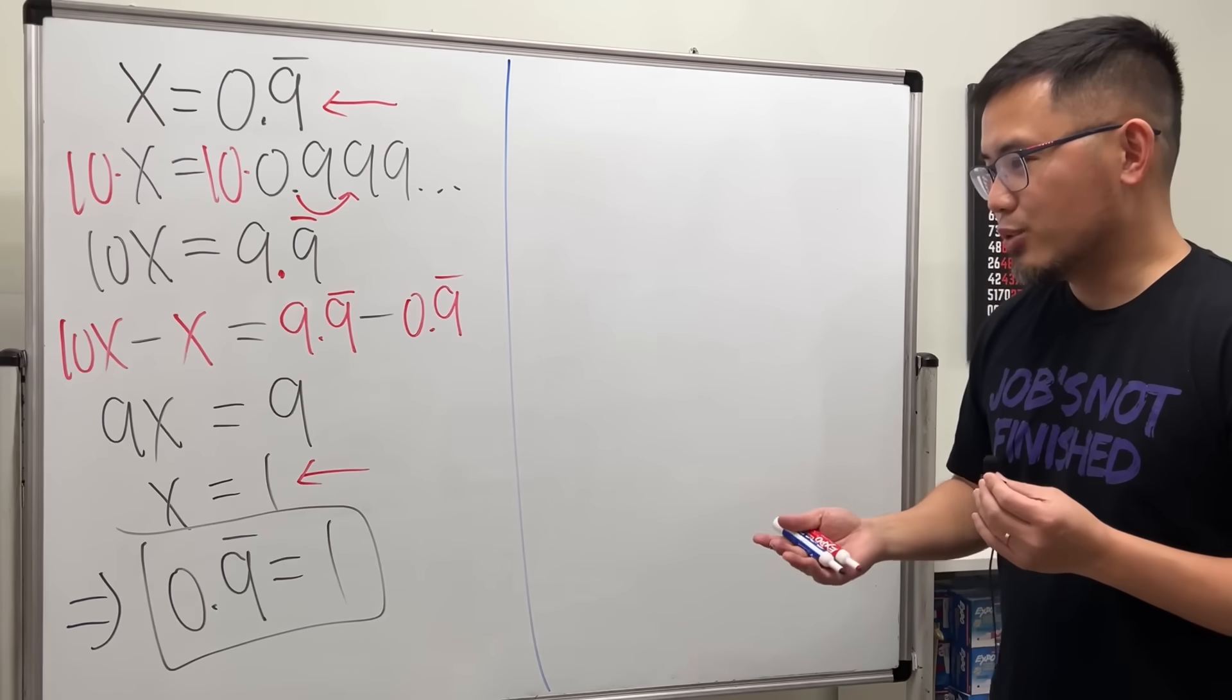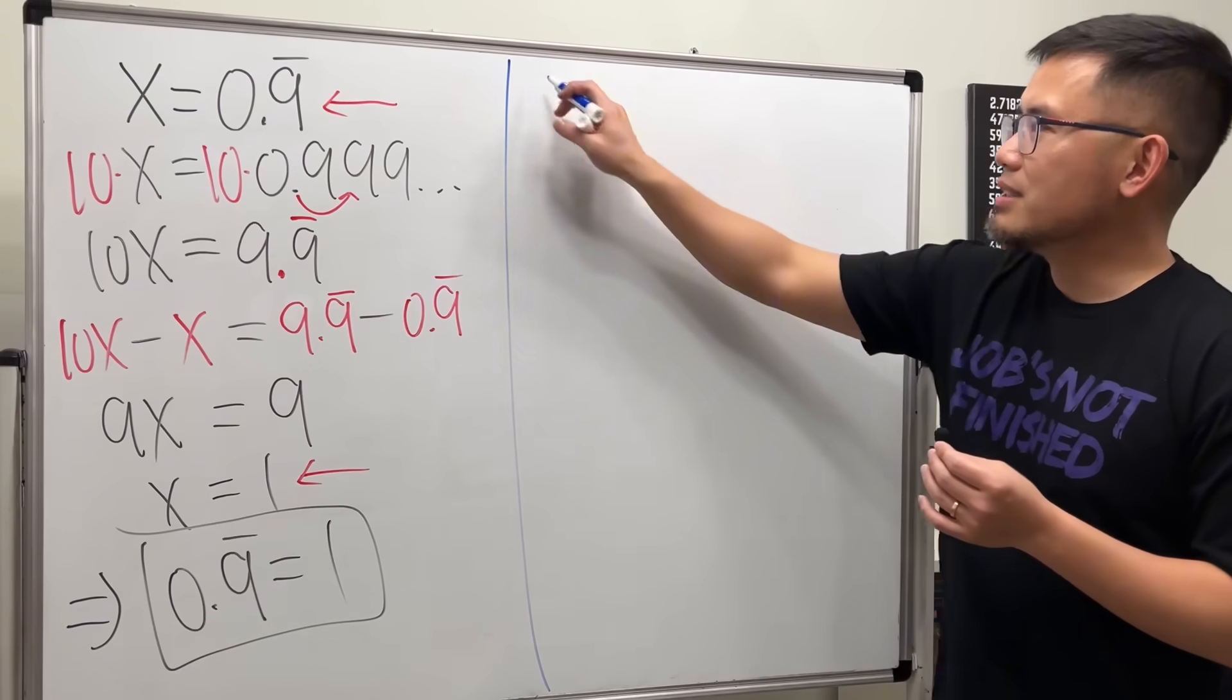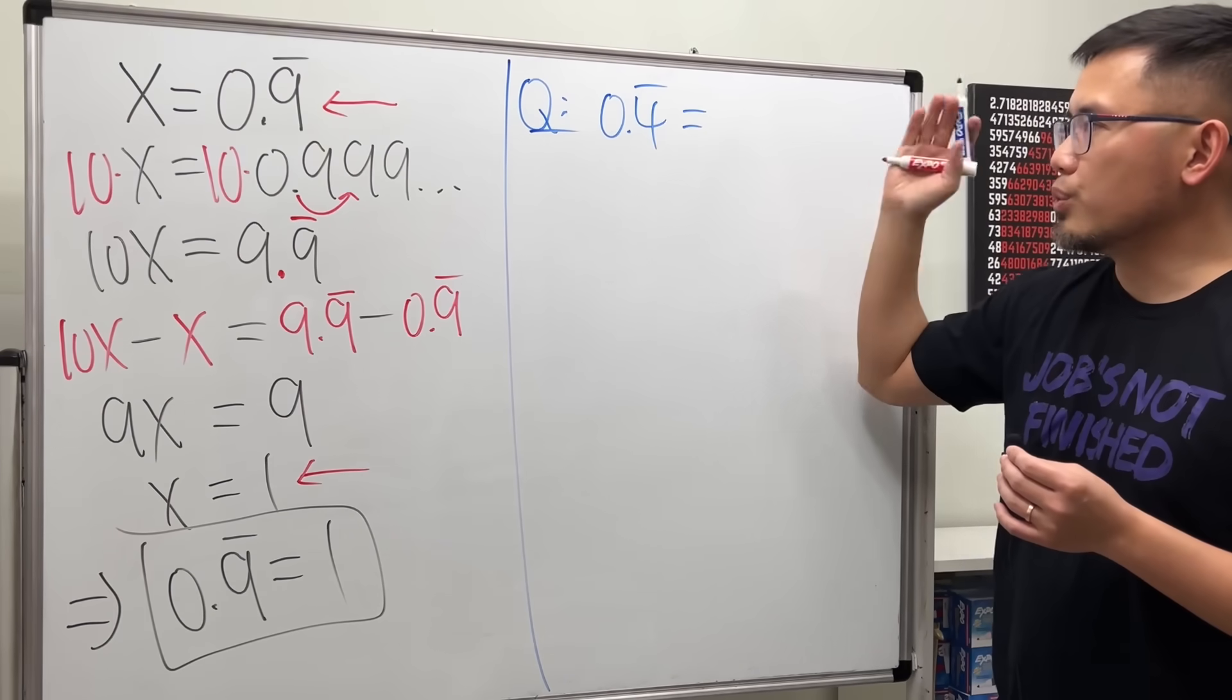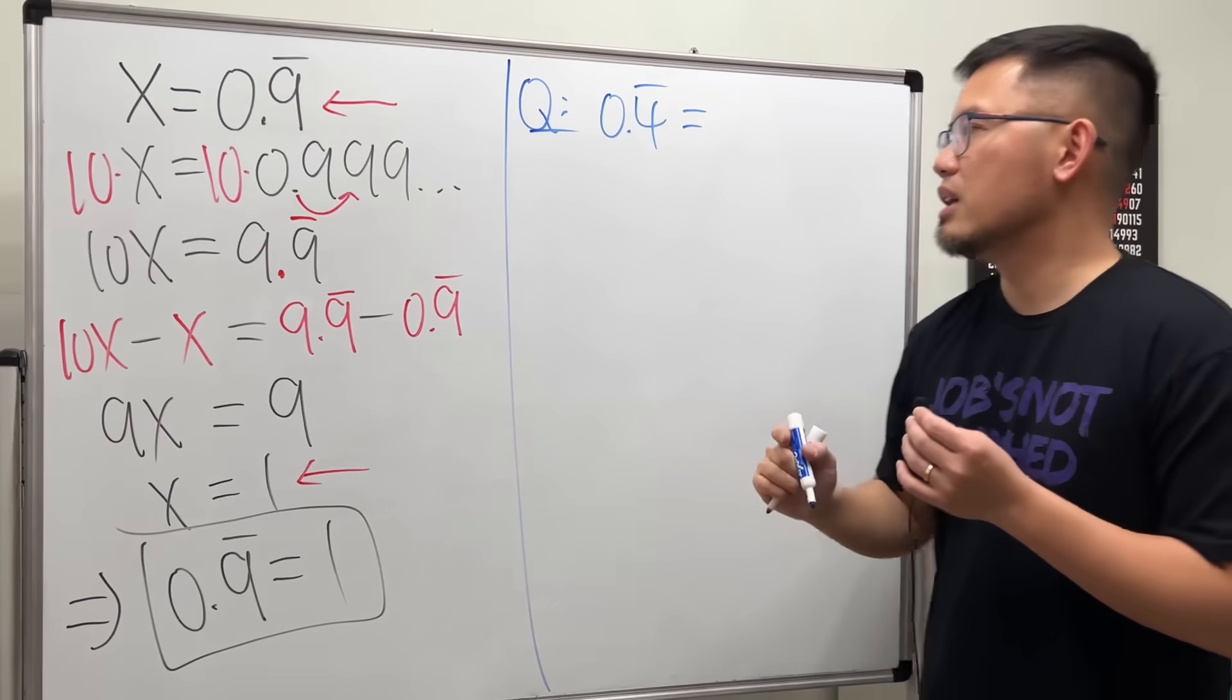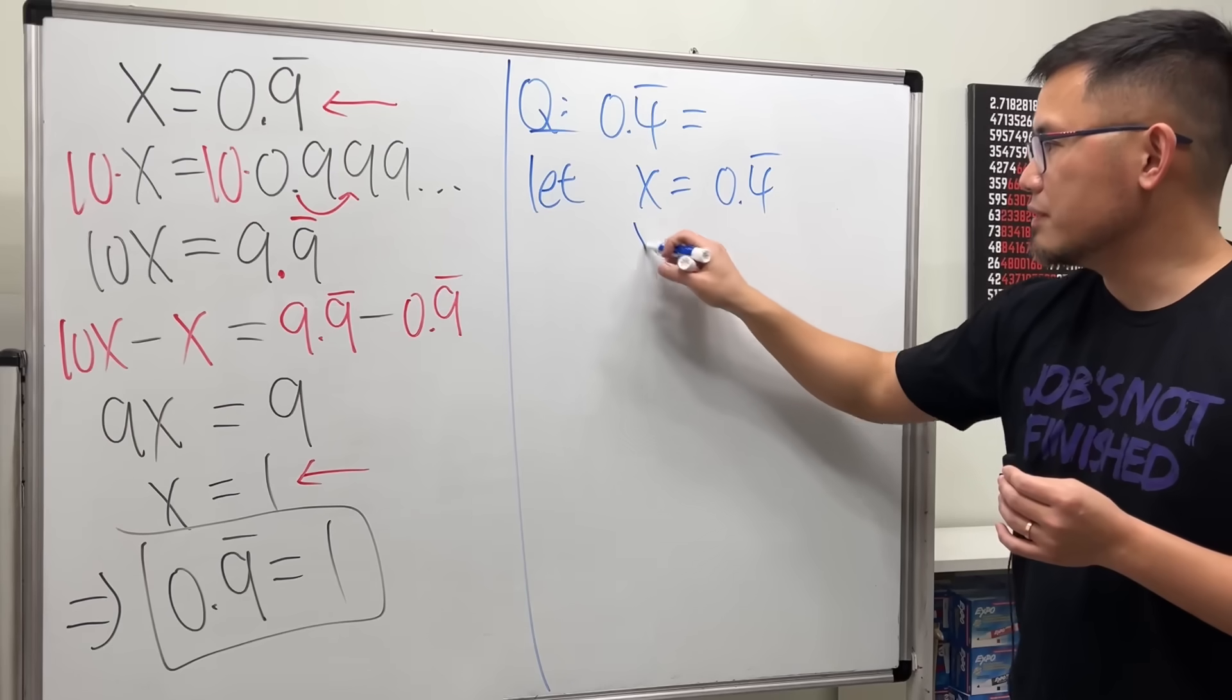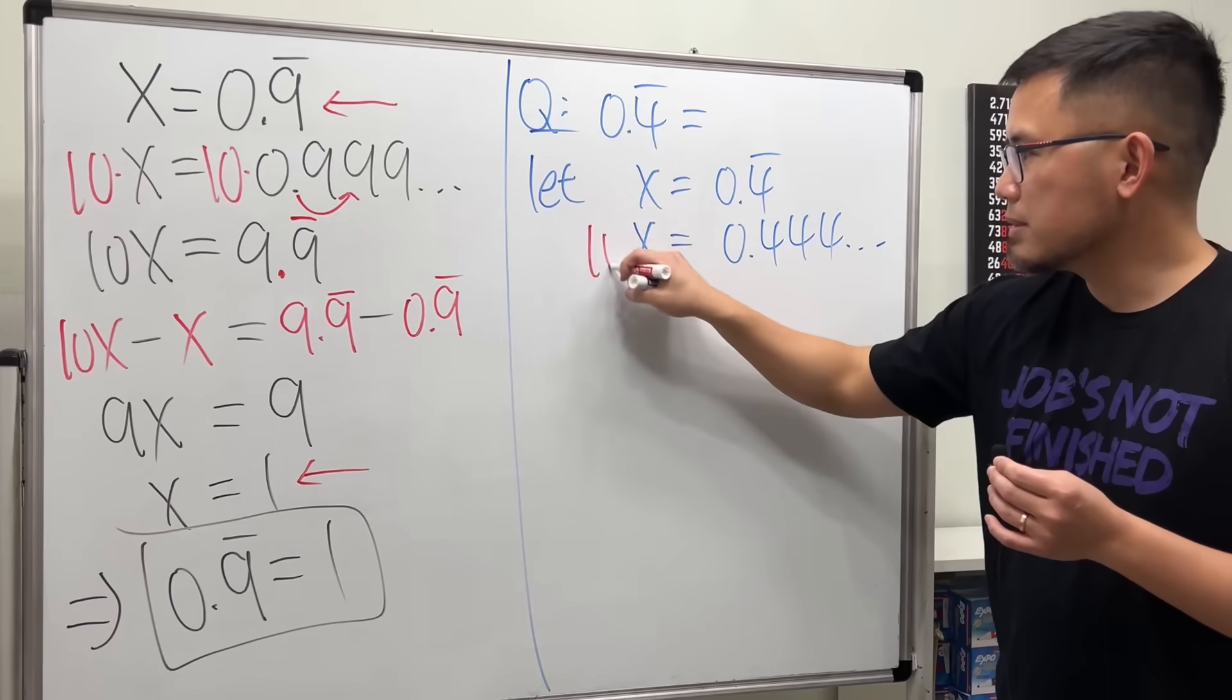If we take a look at another repeating decimal number, the following is more believable. So let's take a look at that first. What if I want to ask you, 0.4 repeating is equal to what? Can we do the same thing? Yes. Let's start off by saying that x equal to 0.4 repeating. So this means we have x equals 0.444 forever. Multiply this by 10.